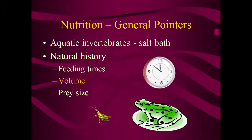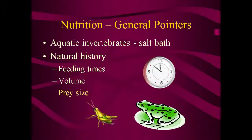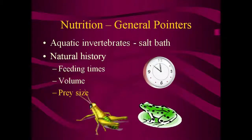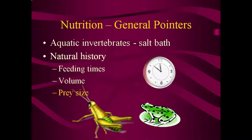Note that prey must be fed live, as amphibians will not eat dead or non-moving prey. Likewise, the prey size needs to be appropriate for the species. Items that are too small or too large at best may not be eaten and at worst may cause obstruction of their GI tract.